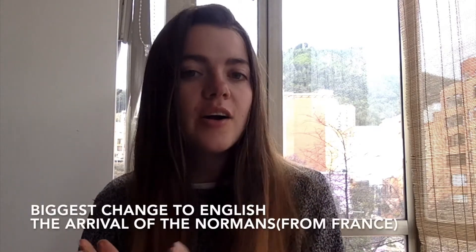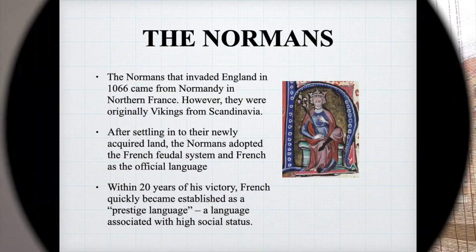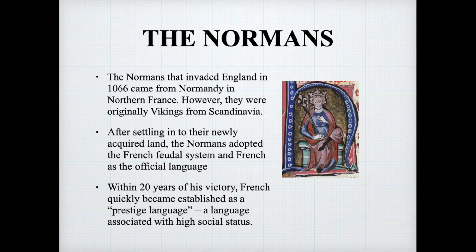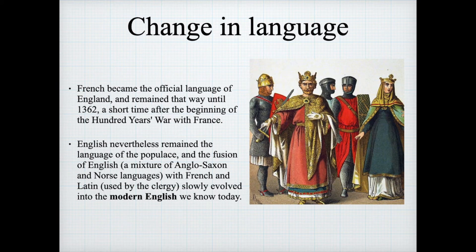The biggest change came from when the Normans from France arrived in England and brought with them the French language. The Normans invaded England in 1066 and came from Normandy in northern France. However, they were actually also originally Vikings from Scandinavia. Once they arrived in England, they changed everything. They adopted the French feudal system and French as the official language. Within 20 years, the French language became established as prestigious — a language associated with high social class.